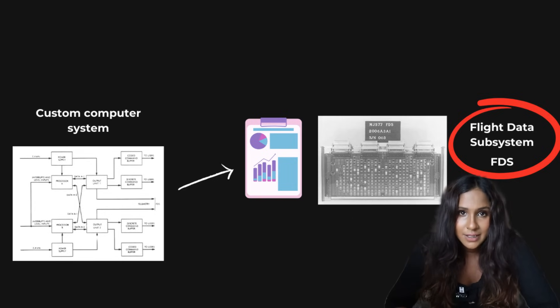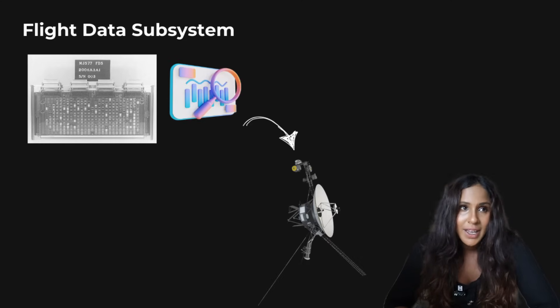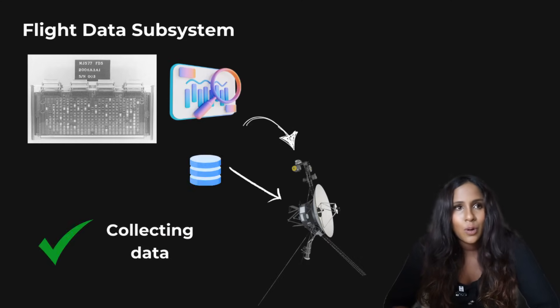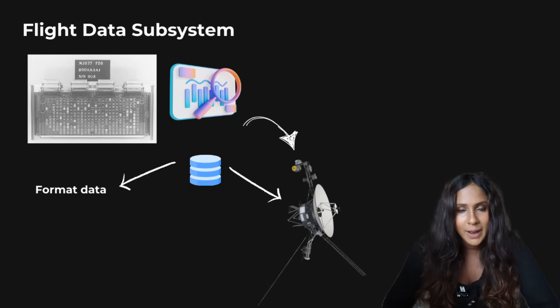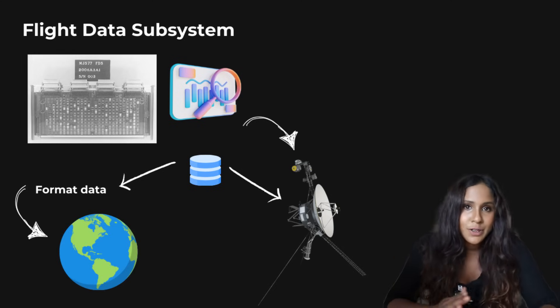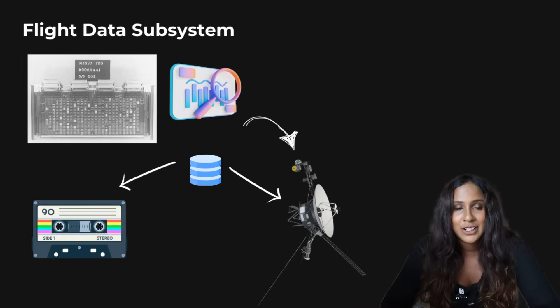You then get the flight data system, the FDS. So this is the data manager. It's responsible for collecting all the scientific data from Voyager's instruments. It generally formats the information that it collects and then prepares it for transmission back to Earth. And in terms of storing the data, we're actually talking about tape recorders. So old school magnetic tape is how data is stored on Voyager.